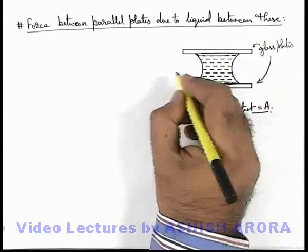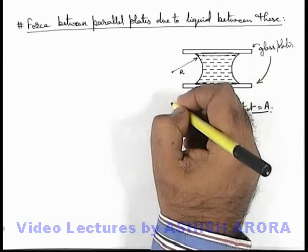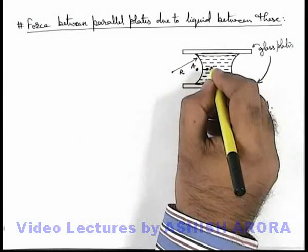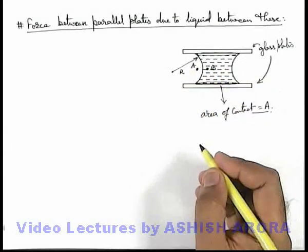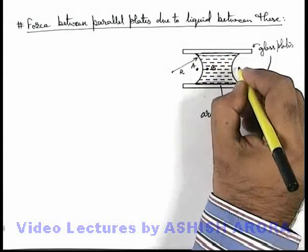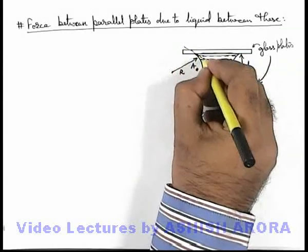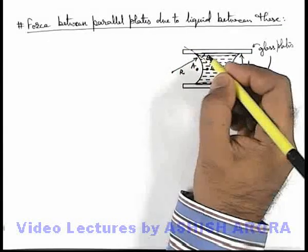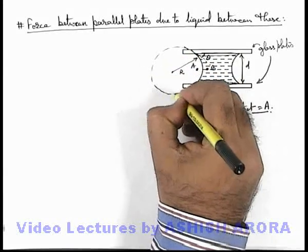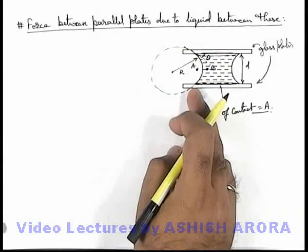So in this situation we can say if the meniscus is having a radius of curvature r, then pressure difference at point A and B, inside and outside can be easily calculated. And in this situation if the separation between the plates is d, and if this contact angle is theta, we can directly write down in this situation if this is the curvature radius and sphere of curvature for this meniscus.